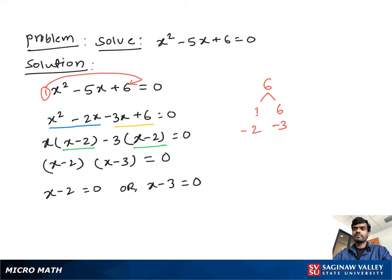Now solving, if we add plus 2 on both sides we get x equal to 2. Or if we add plus 3 on both sides we get x equal to 3. So our final solution is x equals 2 or x equals 3.